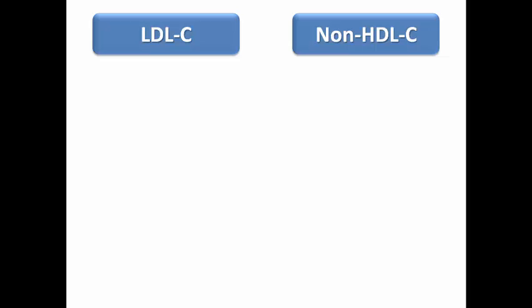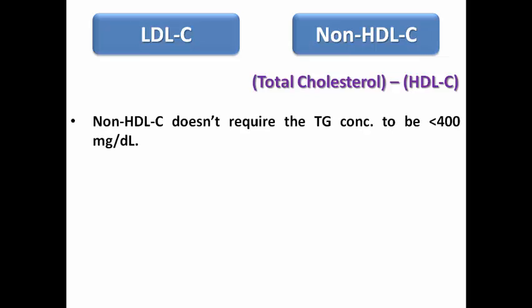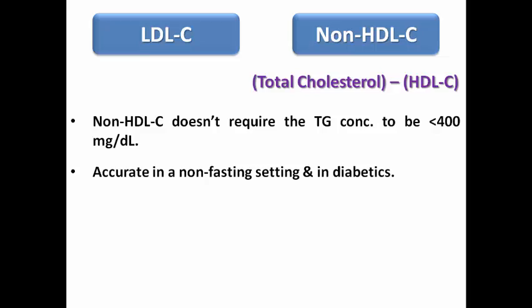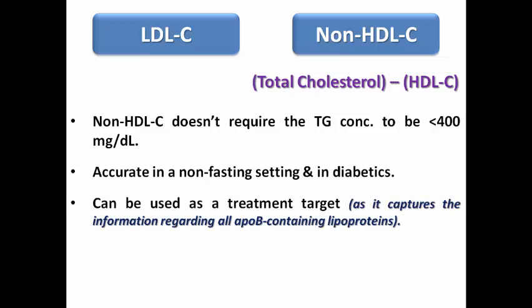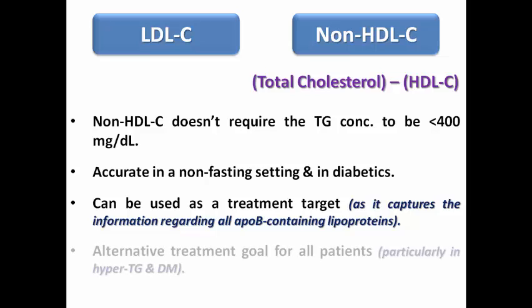The common dilemma is which to choose as a treatment target: LDL or non-HDL cholesterol, which is calculated by subtracting HDL from total cholesterol. Non-HDL has the advantage that it doesn't require triglyceride concentration to be less than 400 for an accurate calculation, so it is accurate in non-fasting states and in diabetics. It can be used as a treatment target because it captures all information regarding all ApoB-containing lipoproteins, which are considered the atherogenic lipids.